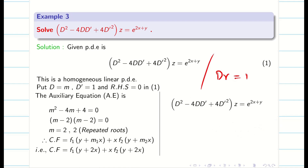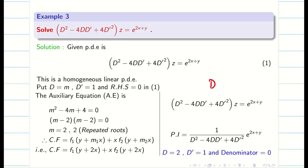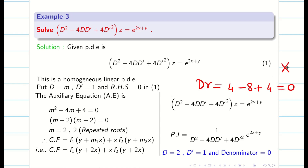Now for PI, write DR for denominator for simplicity. The coefficient of x is 2 so D=2, and the coefficient of y is 1 so D'=1. Substituting: DR = 4−4·2·1+4·1 = 4−8+4 = 0. The denominator is zero — this is very important. If the denominator is non-zero you stop; if it is zero, pre-multiply by x and differentiate the denominator partially with respect to D.